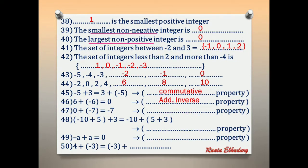Number 47: 0 plus negative 7 equals negative 7. If we add 0 to any number, the answer is the same number. This property is called additive identity.